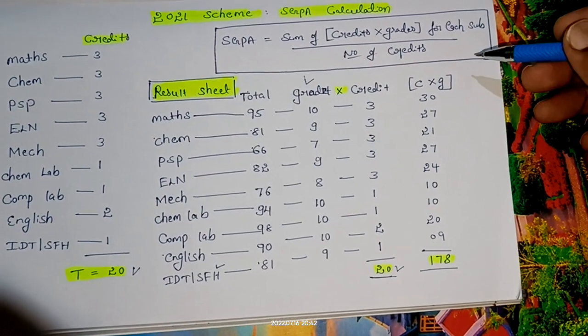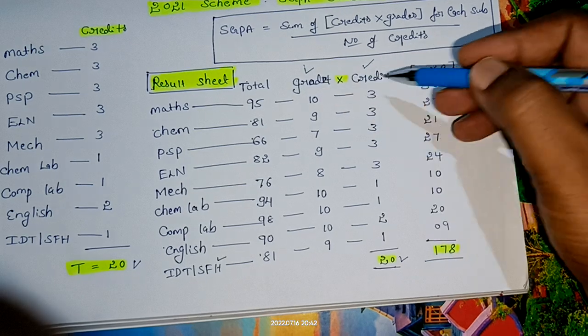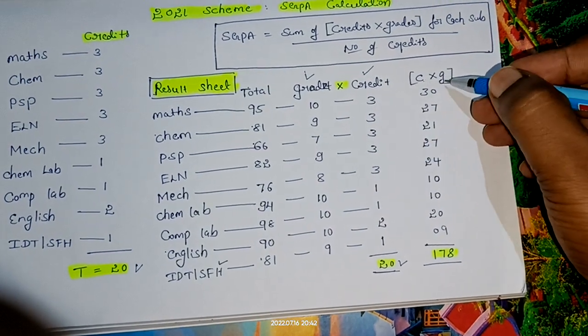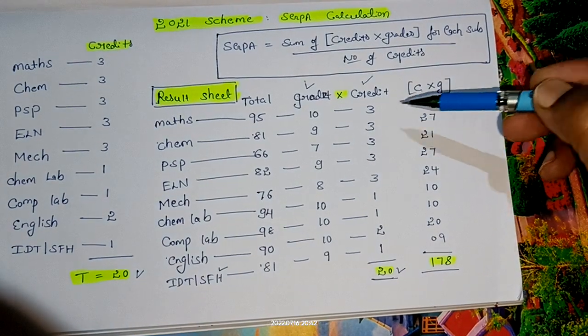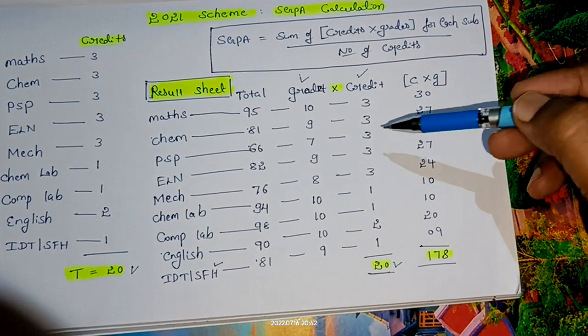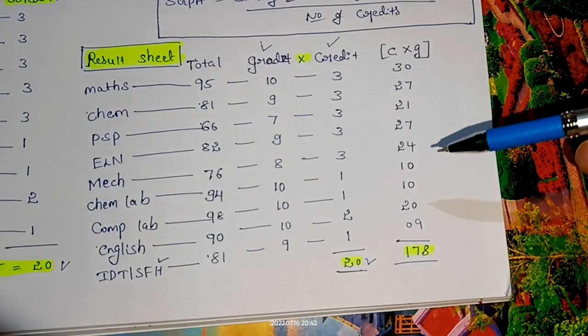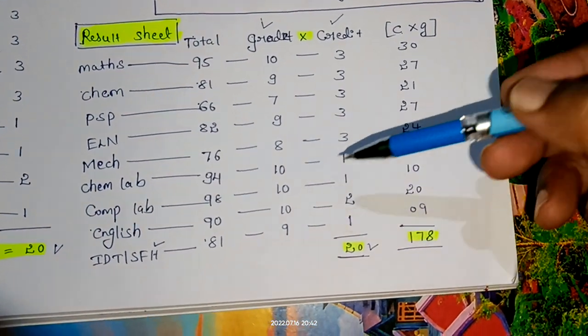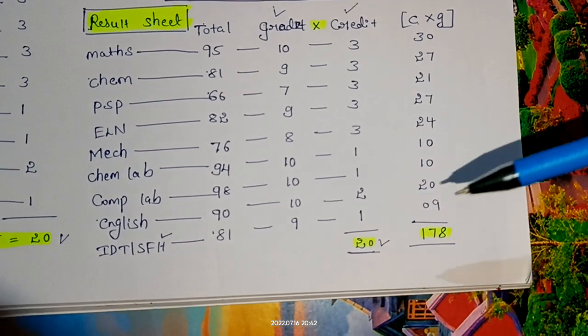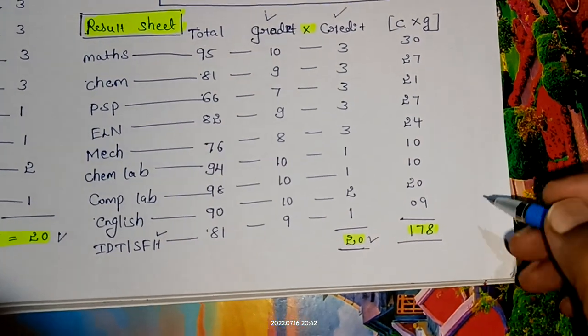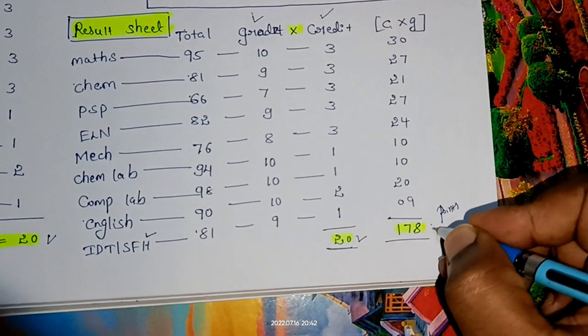Once I have grades and credits, you should multiply the credits with grades. If I multiply 10 with 3, I get 30. Then 9×3=27, 7×3=21, 9×3=27, 8×3=24, 10×1=10, 10×1=10, 10×2=20, 9×1=9.